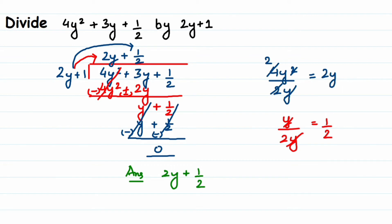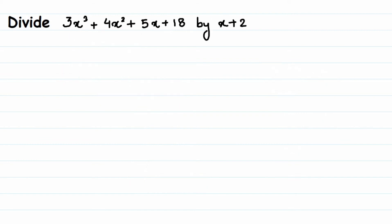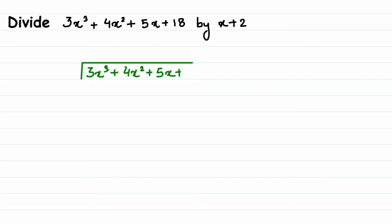Now we'll go to the last problem. This one has four terms as the dividend. The question is: divide 3x cubed plus 4x squared plus 5x plus 18 by x plus 2. So the dividend is 3x cubed plus 4x squared plus 5x plus 18 and the divisor is x plus 2.